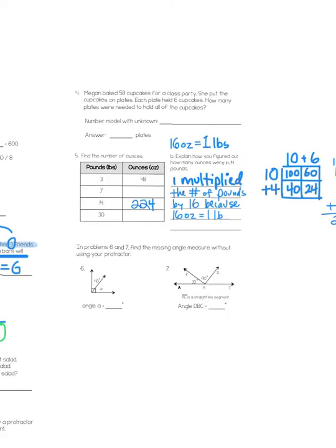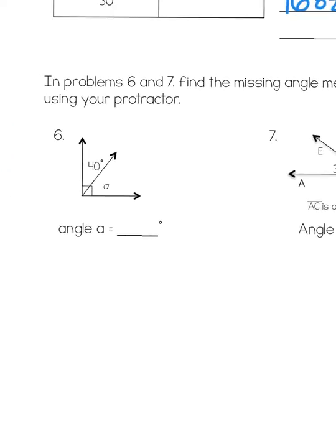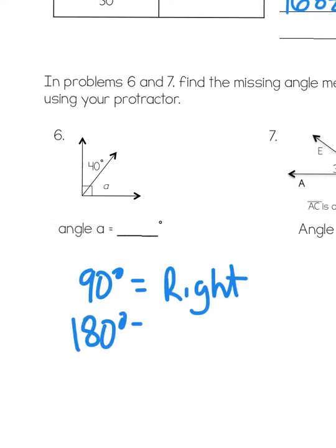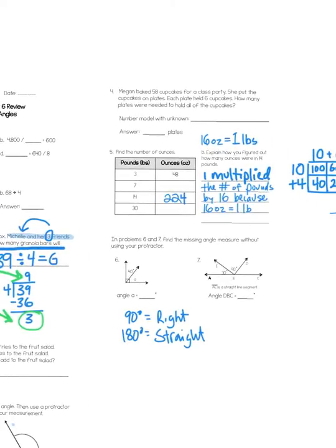Number 6 and 7 ask you to find the missing angle measure without using a protractor. Now, if we know that a 90 degree angle equals this right angle and a 180 degree angle is our straight angle or a straight line. This is really not an angle measurement problem so much as it is a fact family problem.